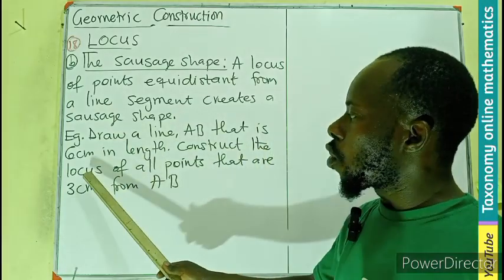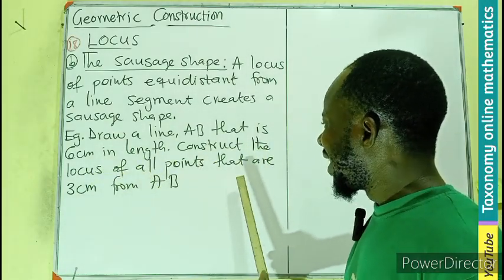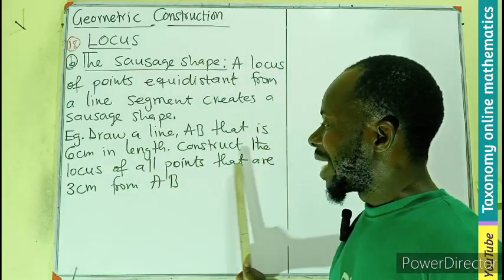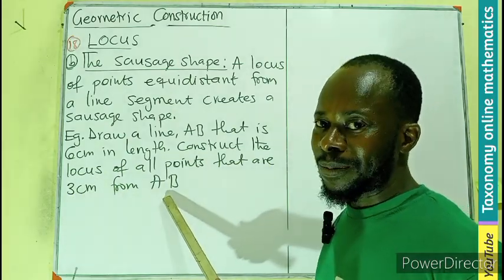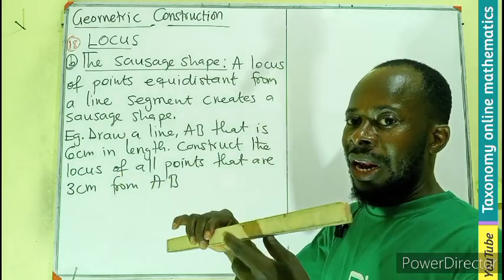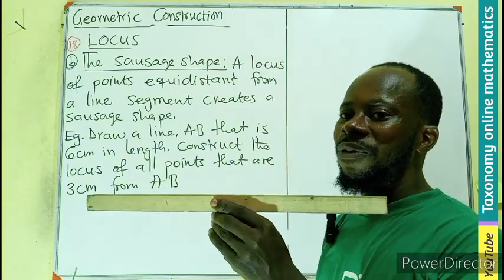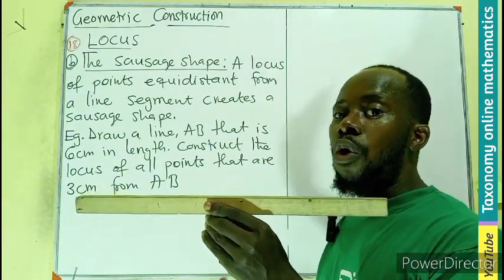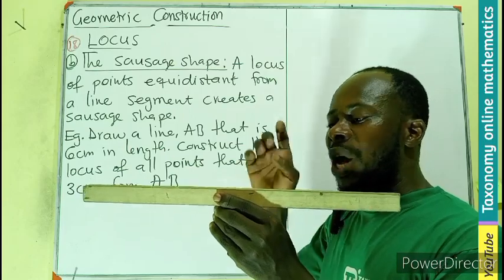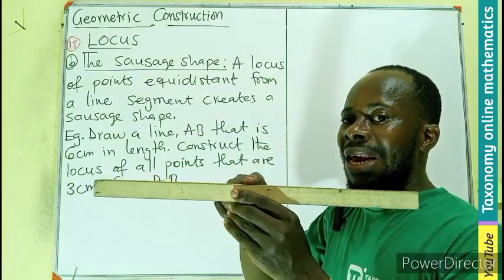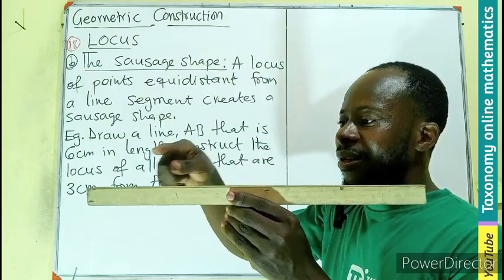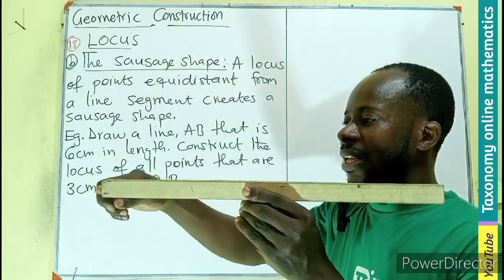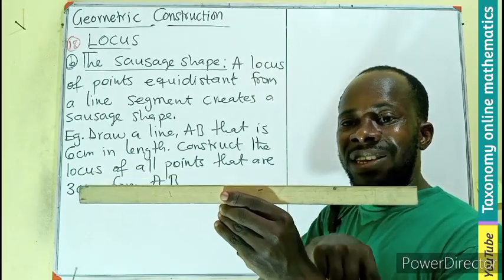So we have a line segment AB. We are looking for a locus which is three centimeters away from here. Someone may put it here, away from here, somebody will put it this way here below. You can see there are various three centimeter directions we can get from here.